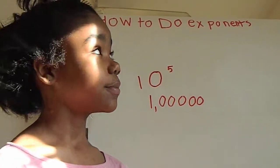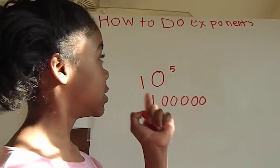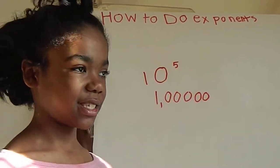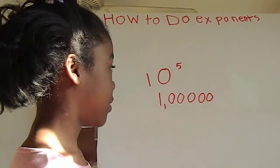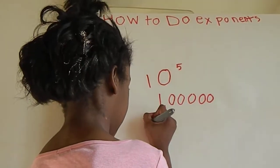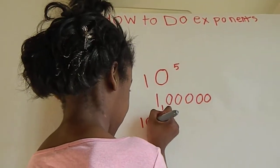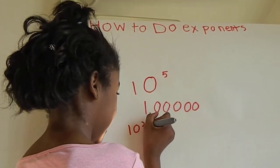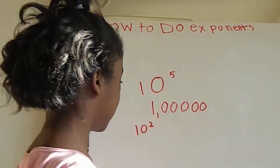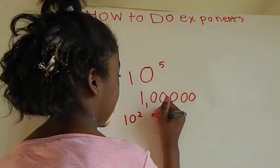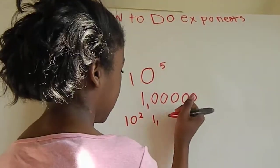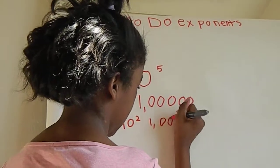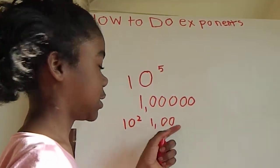Today we are going to do some more exponents. I'm going to write a 10 and put a 2 right here — 10 to the power of 2 — and this equals 100.